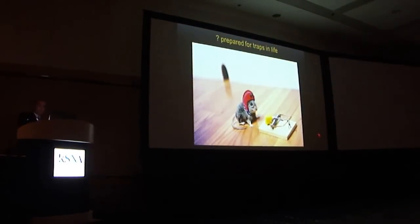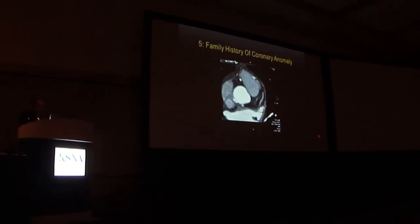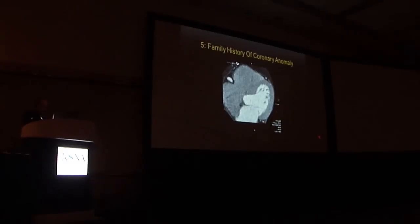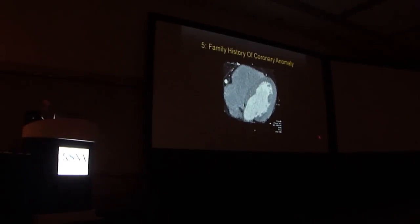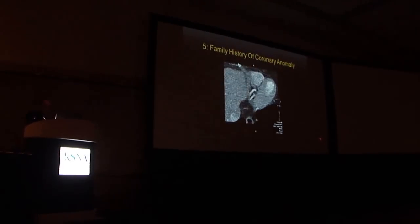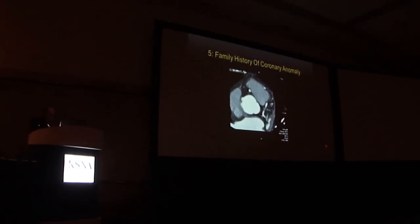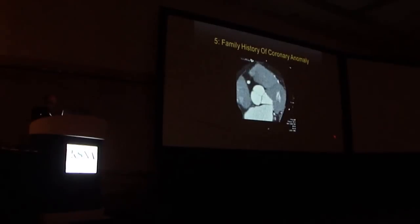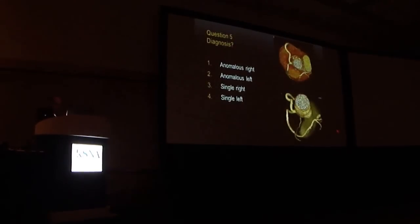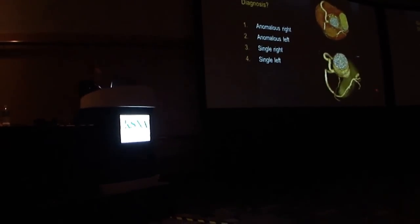Next patient: family history of coronary artery anomaly. This was a self-pay patient who wanted a CTA done. The father had an anomalous coronary artery. Differential considerations were: anomalous right, anomalous left, single right, or single left coronary artery. 48% correct.